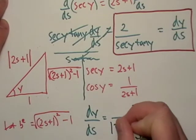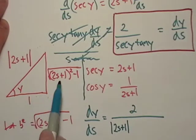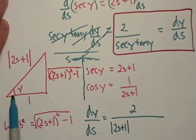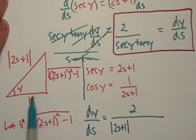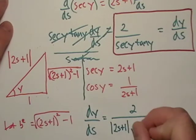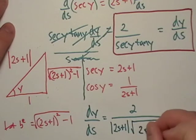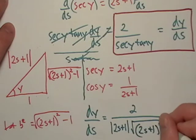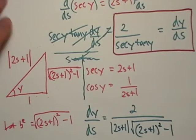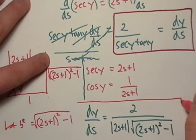Secant of y is just equal to 2s plus 1. But it's actually the inverse of cosine over here. So, let's just go ahead and write that down. And then if we go over here, tangent of y, that's just opposite over adjacent. Which is just plain square root 2s plus 1 squared minus 1. Okay. Now, this part is going to be your final answer.